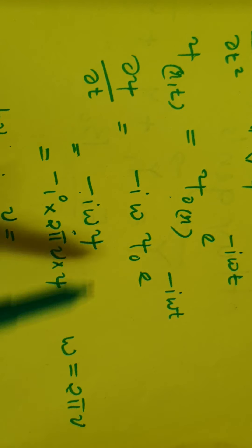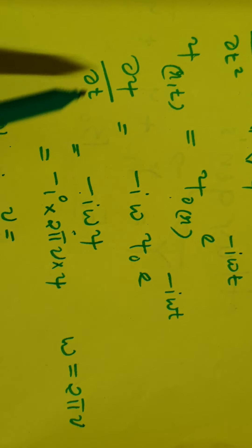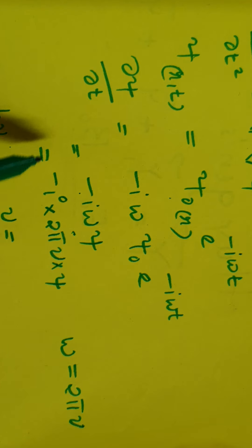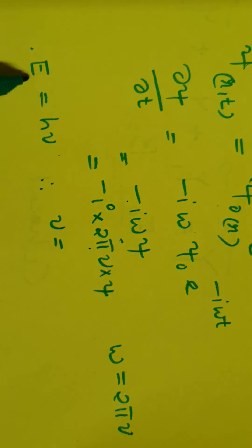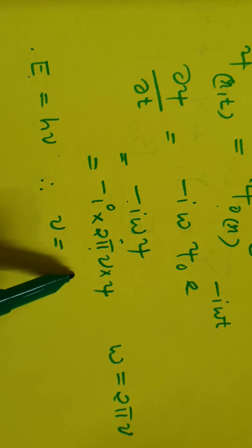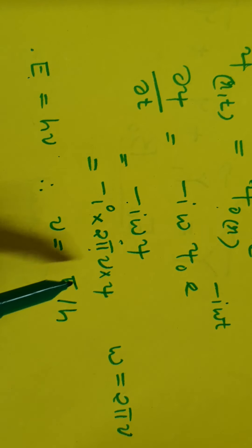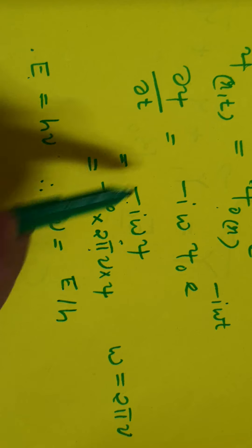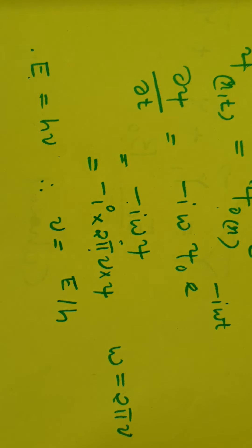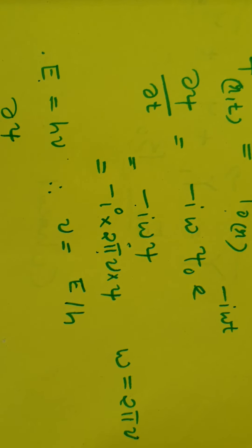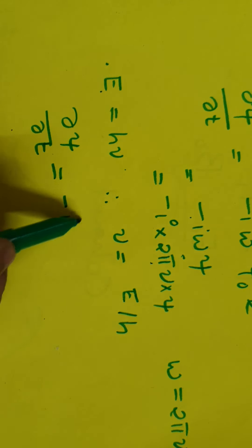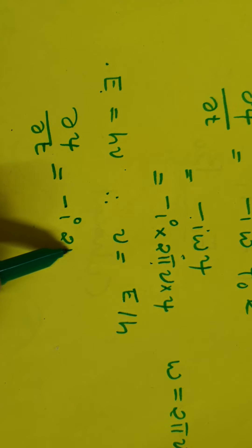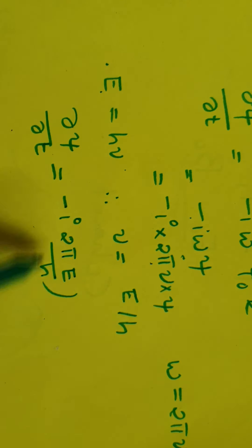Since ω = 2πν, this can be written as ∂ψ/∂t = −i(2πν)ψ. According to Planck's law, E = hν, so ν = E/h. Substituting the value of ν, we get ∂ψ/∂t = −i(2πE/h)ψ.